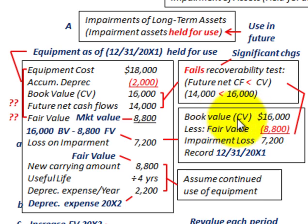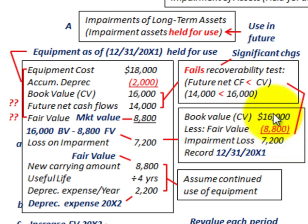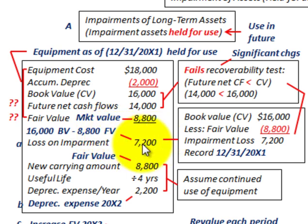Now we can calculate the impairment loss. We take the book value or carrying value of $16,000 less the fair value of $8,800 — because we're comparing carrying value versus fair value. Since the fair value is less than our carrying value, we have an impairment loss of $7,200. Our new carrying amount becomes the fair market value of $8,800.